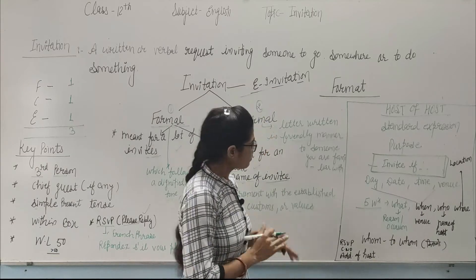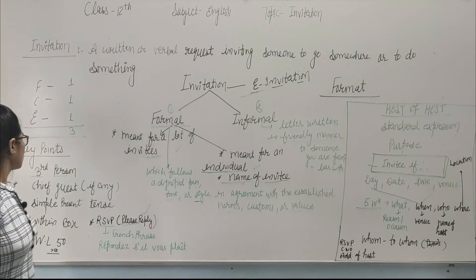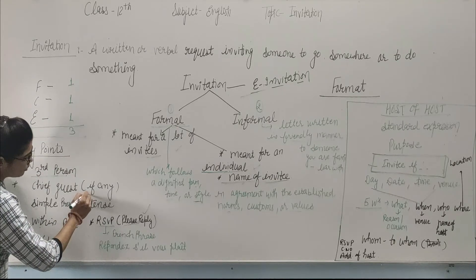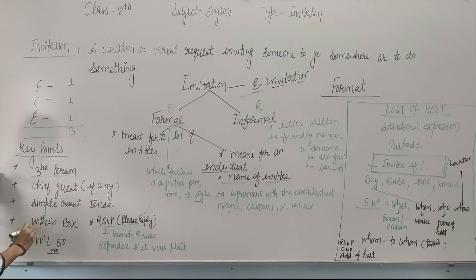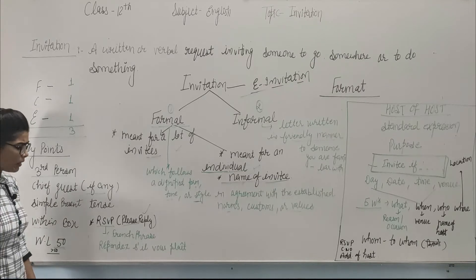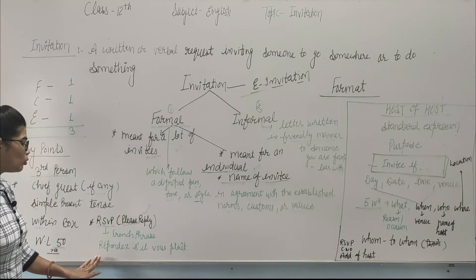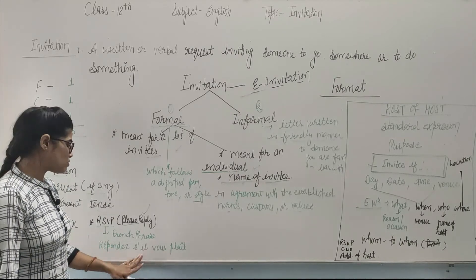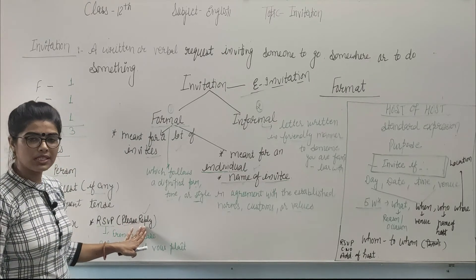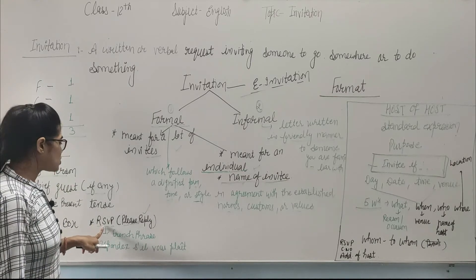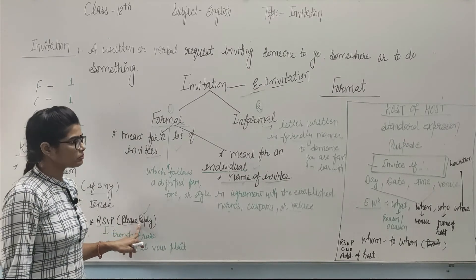Some key points we have to keep in mind: First, use third person. If someone is chief guest, mention them. Use simple present tense. Write within a box, and keep word limit less than fifty - that's best from exam point of view. On the left-hand side at the bottom, write RSVP - a French phrase 'répondez s'il vous plaît' meaning 'please respond.' The host's contact number and address are written there, so people can respond or reply.